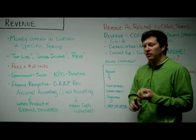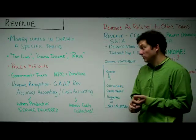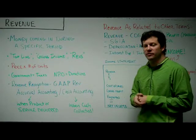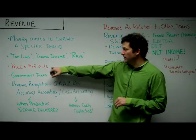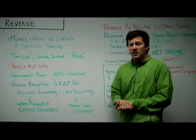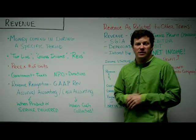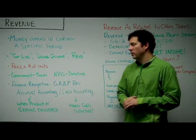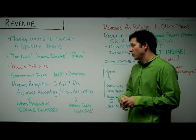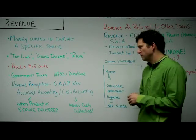Other phrases you'll hear people use for revenue: top line, gross income, and revs — all of those mean revenue. It's the price times the number of units you've sold. This may be easy if you're selling products that all cost the same amount, but a little harder if products or services are priced differently. It's essentially how much money is coming in over a period of time. For the government, revenue equals taxes; for non-profits, revenue might equal donations — it comes in different flavors for different types of organizations.